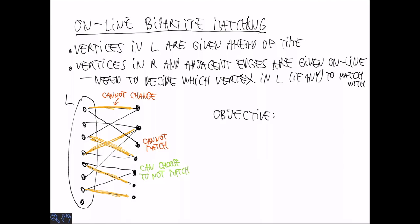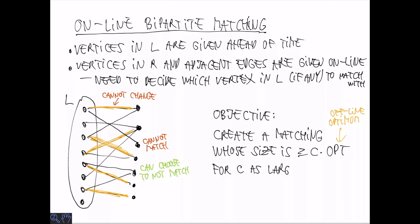So now the objective, naturally, is to create a matching that is as large as possible, and we compare the size to the OPT, the offline OPT. And we would like to obtain size at least C times OPT, where C is as large as possible. So the rest of the lecture is about trying to optimize this competitive ratio C.